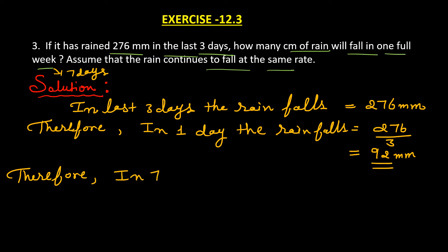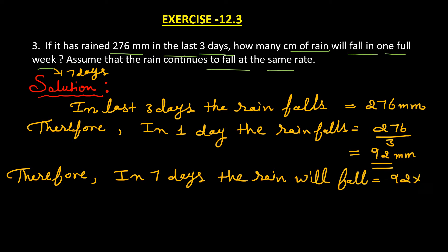Therefore, in seven days the rain fall is equal to 92 into 7, which is equal to 644 mm.